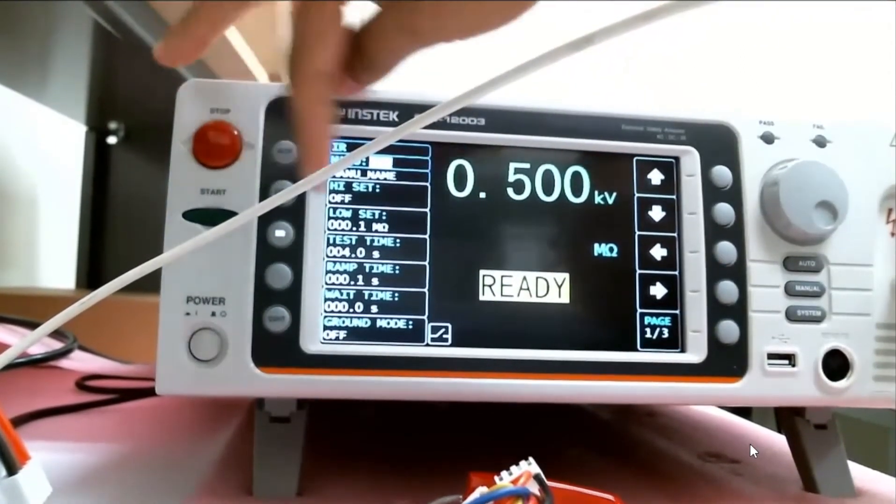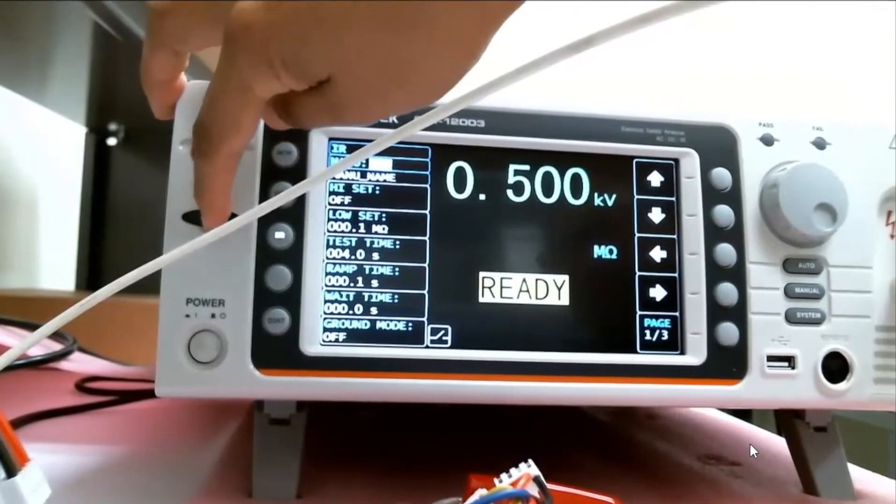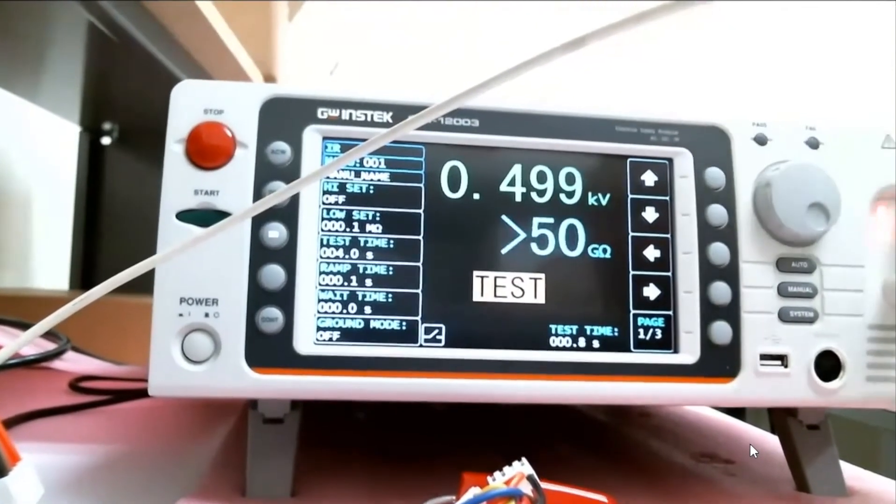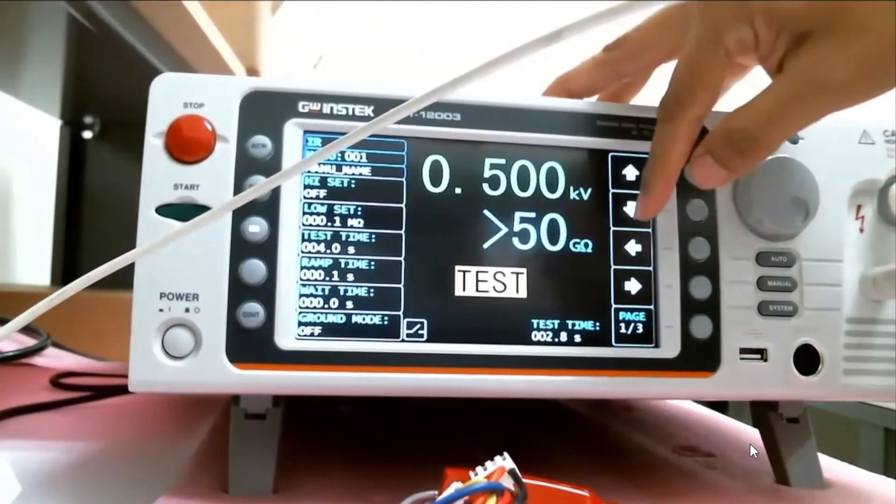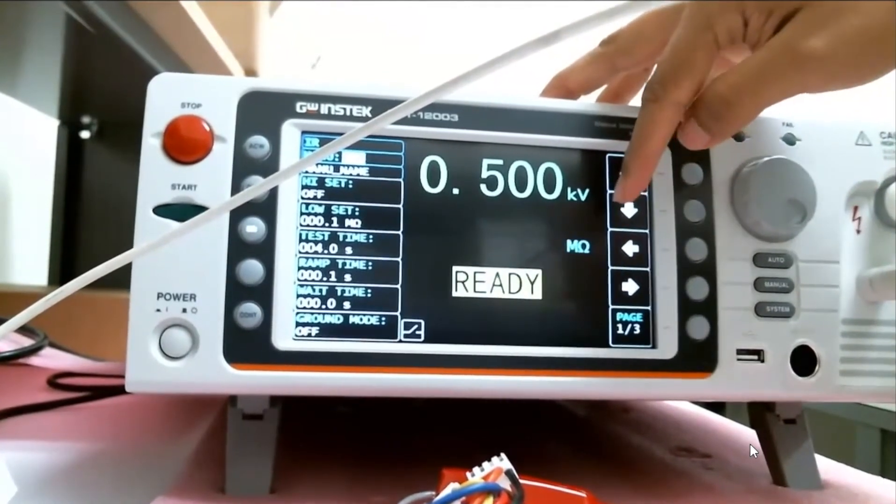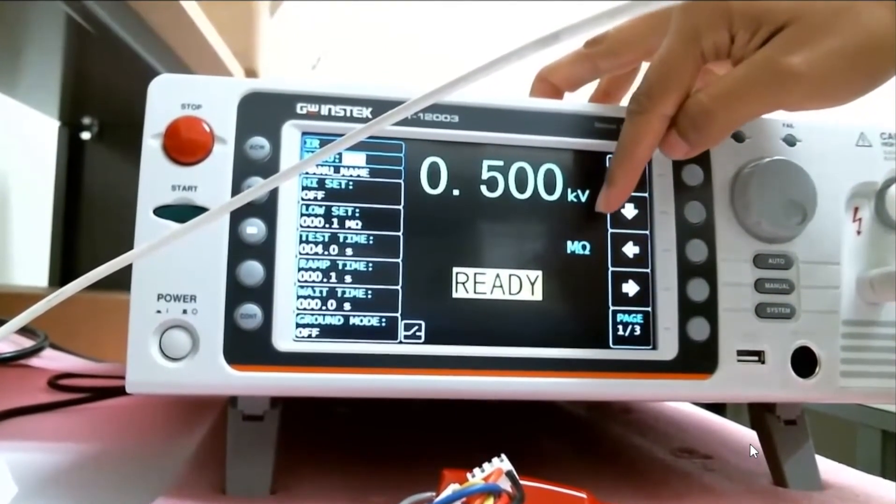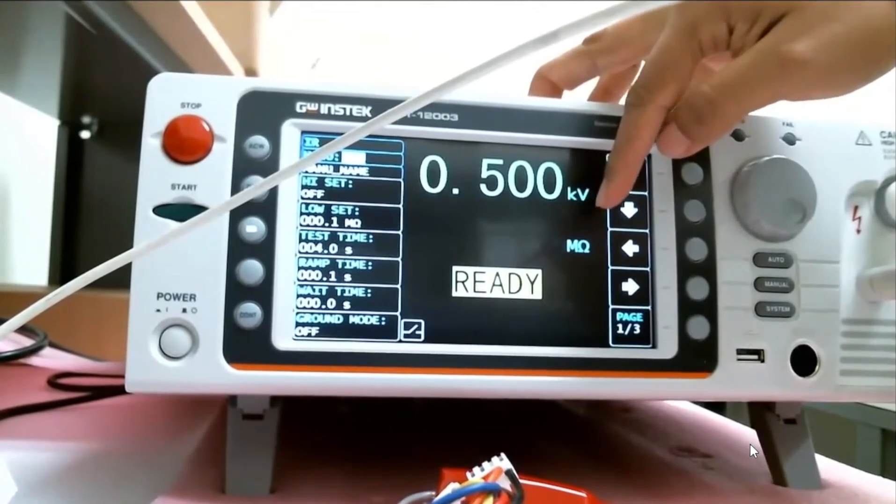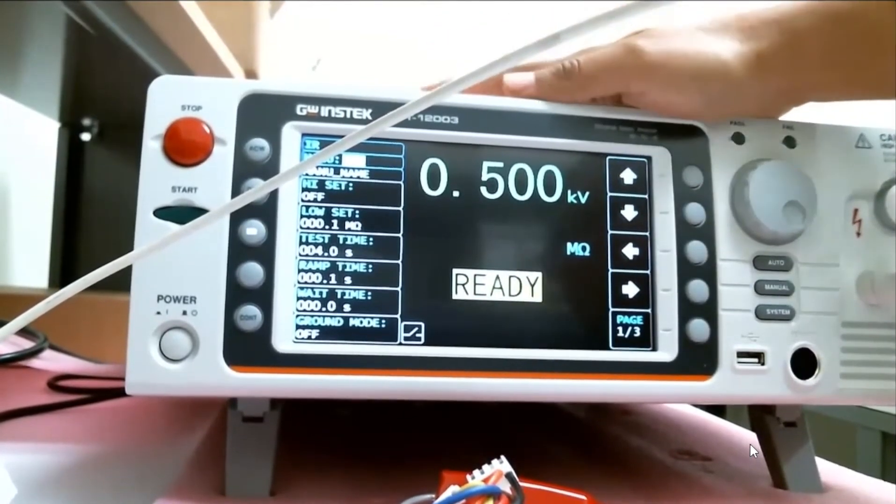In all these settings, I'm not really going to go too much into just for the sake of time and the demonstration. But it's telling me while I test that the impedance is measuring above 50 giga ohms, which is the capacity of this instrument.